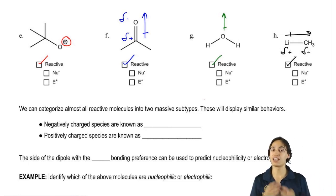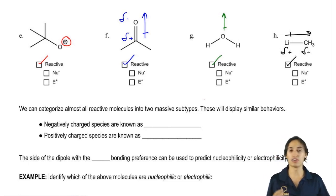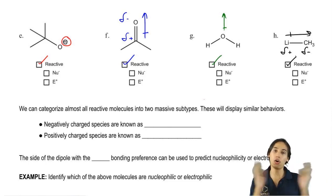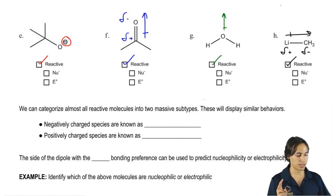But now how are they going to react? That's the next question. What are they going to react as? It turns out that we can basically categorize all reactive organic molecules into two different subtypes.